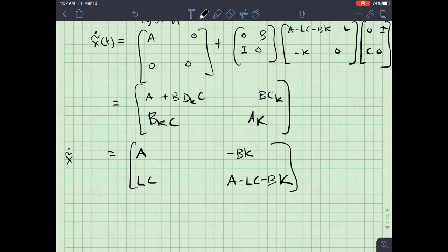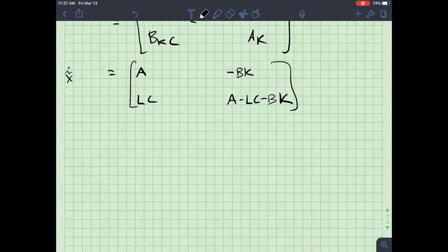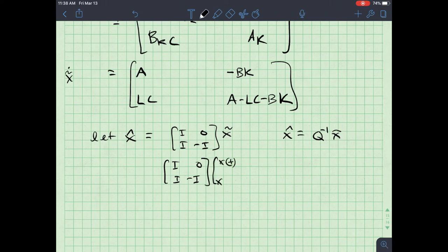All right. So that's my closed loop system X Tilda dot. All right. Now what I want to do is a similarity transform. I don't have time in this video to explain how similarity transforms work, but what we're going to do is this. We're going to say, let's let X hat be equal to I zero I minus I X Tilda. And then what I'll say is that X hat is equal to Q inverse X Tilda.